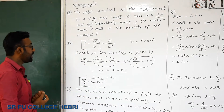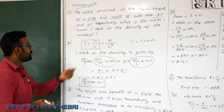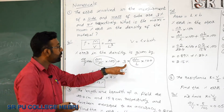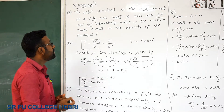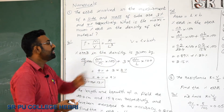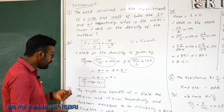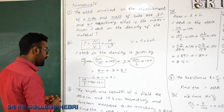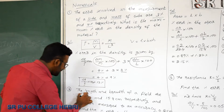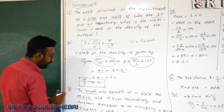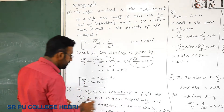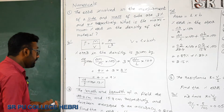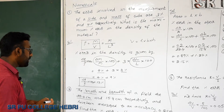The problem is straightforward — you just need to add the percentage errors, and since it is a cube the side is multiplied by 3 for the volume. Moving to the next problem: the length and breadth of a field are given — length is 22.4 cm and breadth is 15.8 cm.